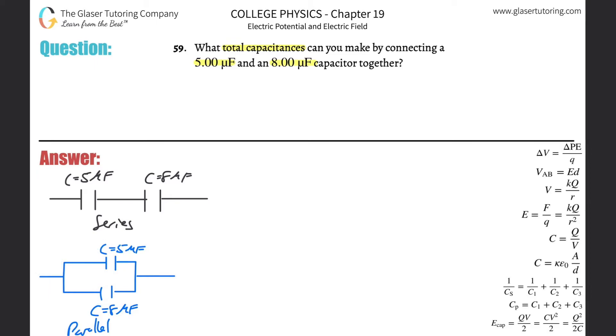Once you recognize that, this problem becomes simple. There's only two ways to do it. In series, the formula is: one over the series capacitance (meaning the total capacitance in series) equals one over the first capacitance value plus one over the second, and then the third, etc., depending on how many you had.